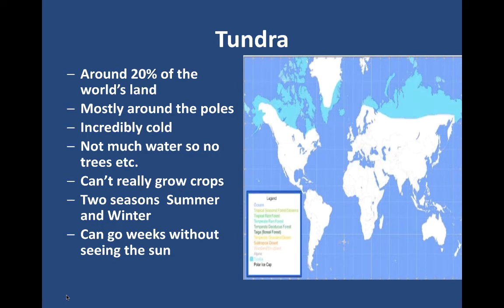As we go around and talk about various areas of the world, the first one is the tundra. These are northern areas — there is actually no real tundra in the south. About 20% of the world's land is tundra, mostly around the poles. It is incredibly cold, and believe it or not, there is not that much water. There's a lot of ice, but it doesn't rain or snow that much, so you don't actually have trees. The growing season is so short it's very difficult to grow crops. You really only have two seasons: summer and winter — either cold or not quite as cold.